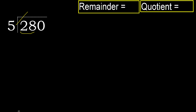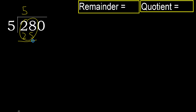5 multiply by 6 is 30 — 30 is greater. 5 multiply by 5 is 25 — 25 is not greater. Subtract, next.